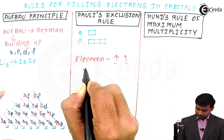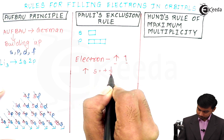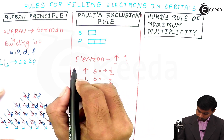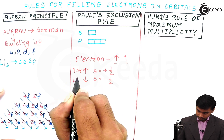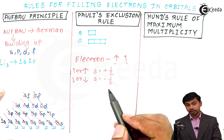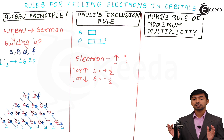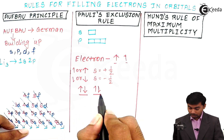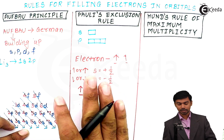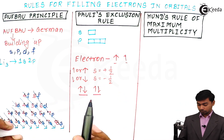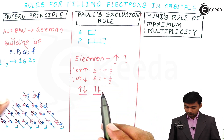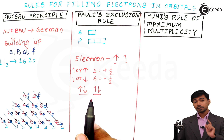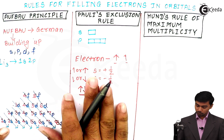Whenever there is an ascending electron, it has a spin value of plus half, and a descending electron has a value of minus half. These are represented as half arrows pointing in opposite directions. When two opposite-spin electrons come together in one orbital, they form a pair. Pauli's exclusion rule states that every electron filling an orbital must have opposite spin — one ascending and one descending in each orbital.